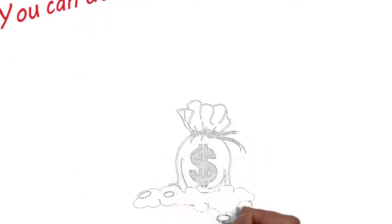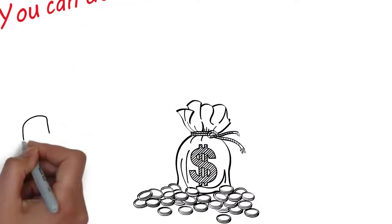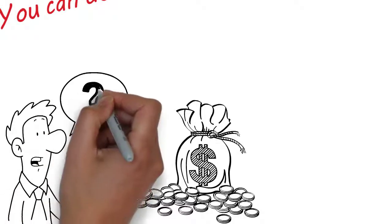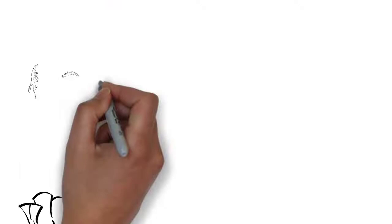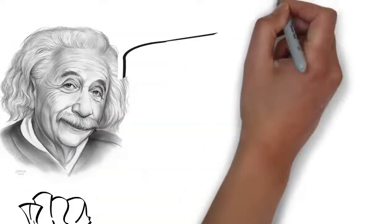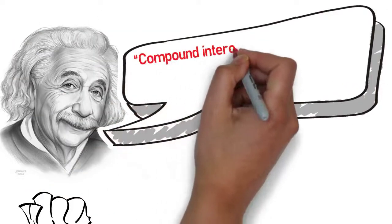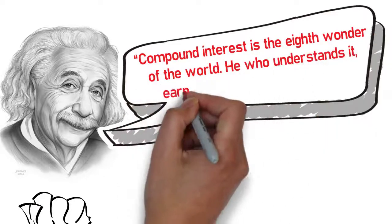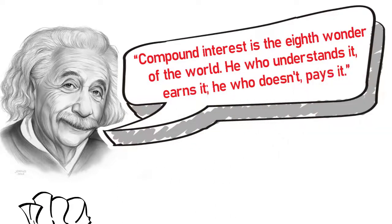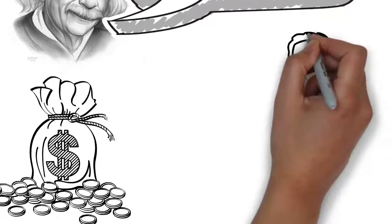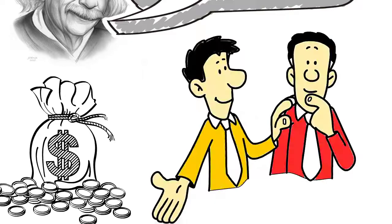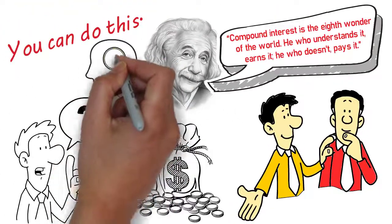Several factors come into play when we're talking about saving money. For one thing, many of us don't have a good understanding of how compound interest works. The great Albert Einstein said the following: compound interest is the eighth wonder of the world. He who understands it earns it. He who doesn't pays it. So we're going to talk about compound interest first. I mean, if Einstein thinks it's important, shouldn't you?